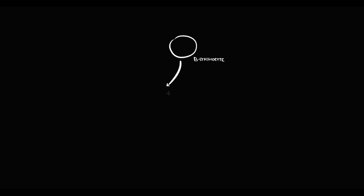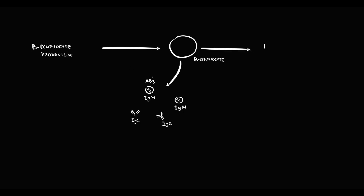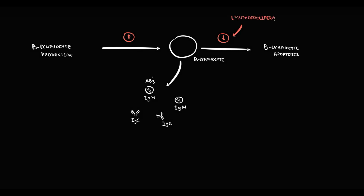To explain the pathogenesis: B-lymphocytes produce antibodies — immunoglobulin M and immunoglobulin G. The amount of B-lymphocytes in the blood is determined by their production and apoptosis. If production increases or apoptosis decreases, the amount of B-lymphocytes increases. The most common reason for decreased apoptosis is lymphoproliferative disorders — chronic lymphocytic leukemia, non-Hodgkin lymphoma, and multiple myeloma.